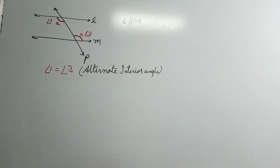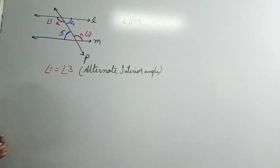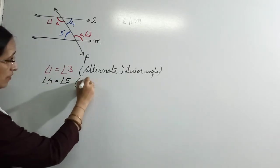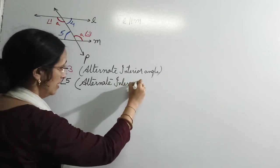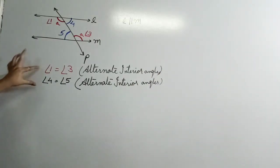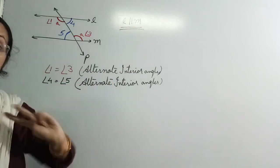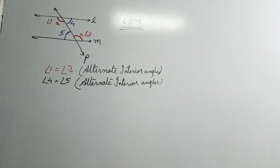Similarly, alternate interior angles का एक और pair बनेगा यहाँ पे. If I take it as angle 4 and angle 5, तो again angles equal होंगे — angle 4 will be equal to angle 5, and we will call it alternate interior angles. अगर L, M के parallel नहीं होंगे, तो यह alternate interior angles होंगे तो, but they will not be equal.